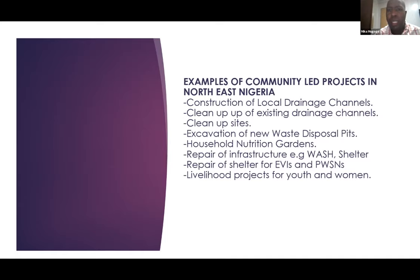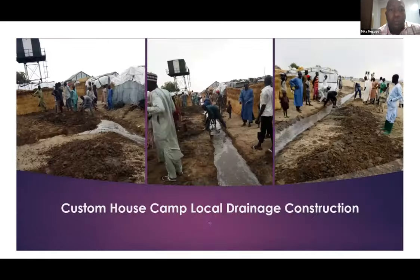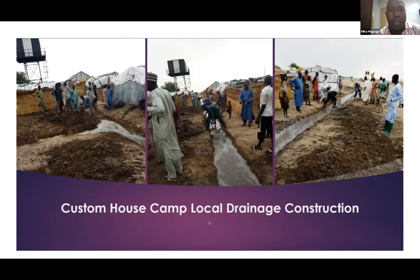Examples of Community-Led Projects in northeast Nigeria include: construction of local drainage channels, cleanup of existing drainage channels, cleanup of sites, excavation of waste disposal pits, nutrition gardens, repair of infrastructure, repair of shelters for EVIs and persons with specific needs, and livelihood projects for youth and women. One project at a site called Custom House provided the community with tools and they constructed local drainage — a site that floods perennially — by organizing themselves and digging drainage channels.